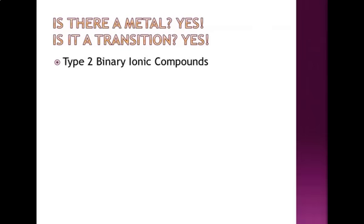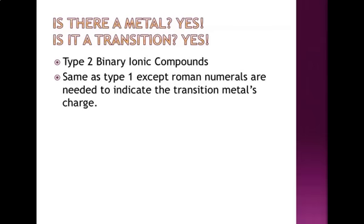So we call these type 2 binary ionic compounds. They're almost exactly the same as type 1, except that we use a Roman numeral to indicate the actual charge of that transition metal.